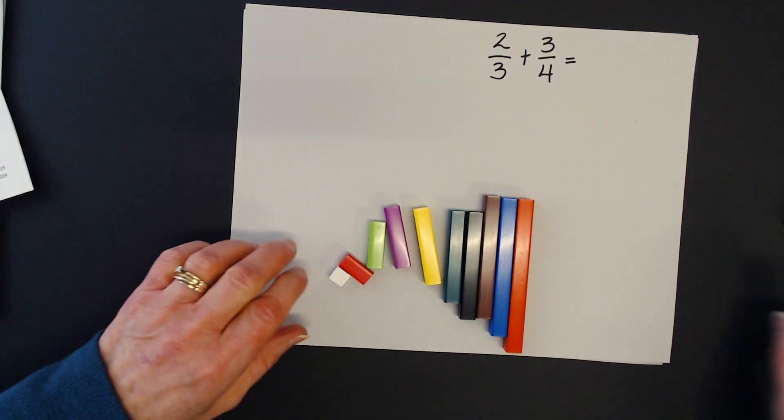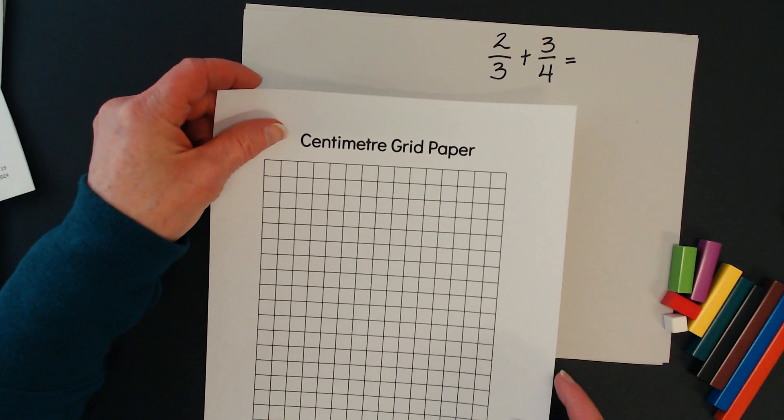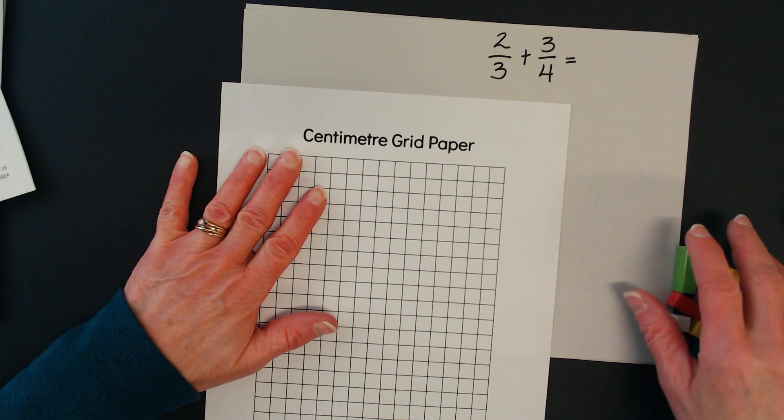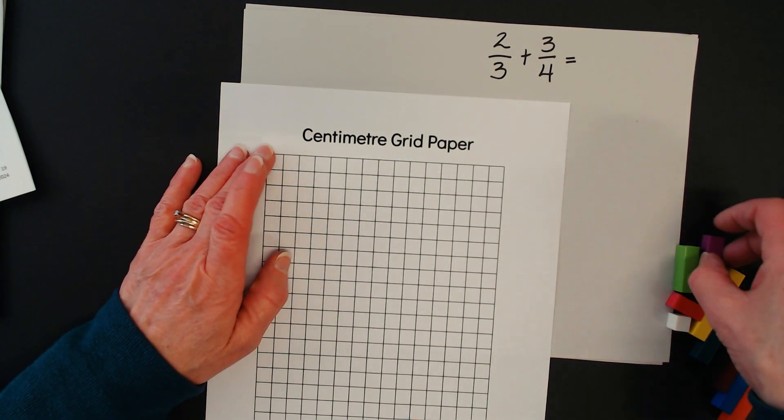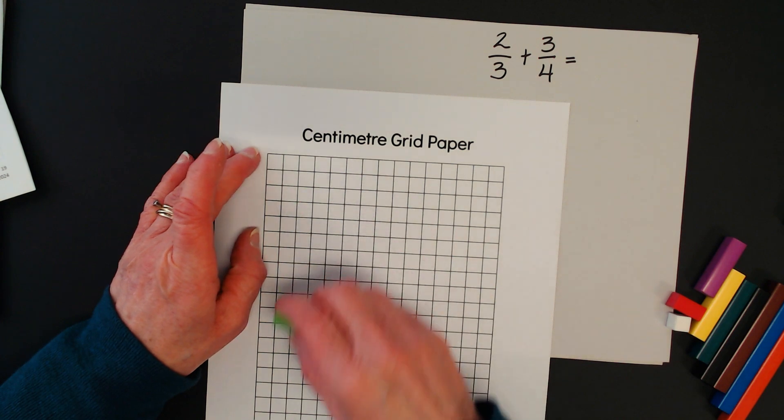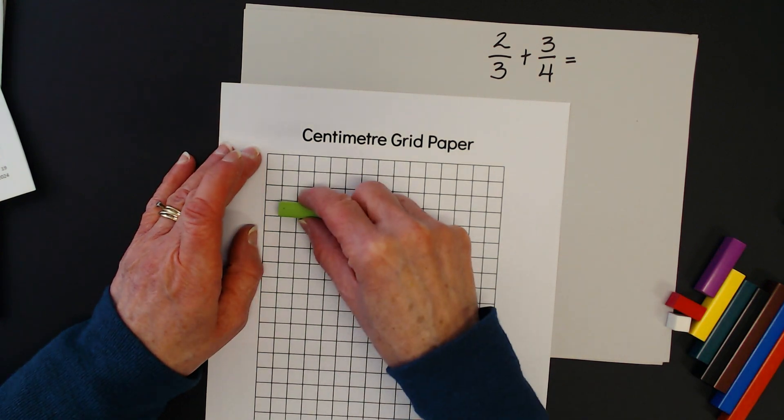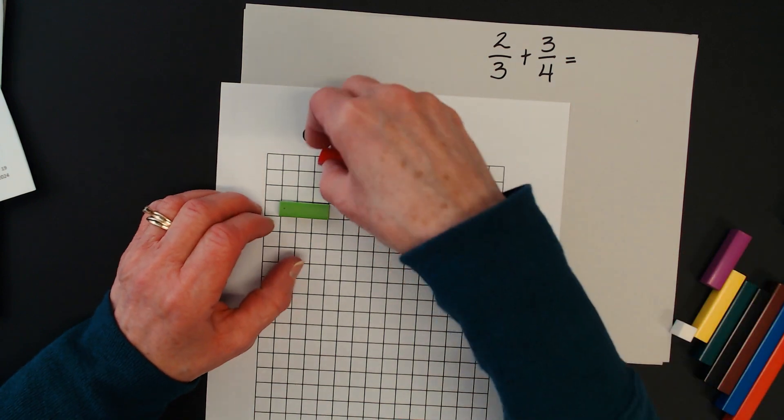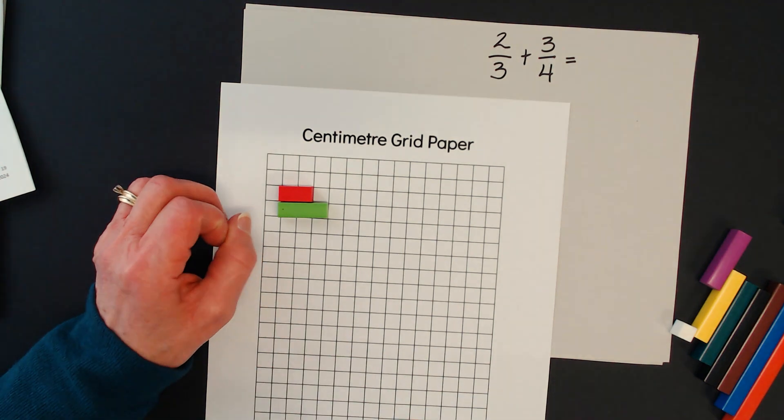Now I'm going to use some centimeter grid paper to make it easier. The first thing I want to do is build two thirds. I'm going to use the grid paper to help me because this rod has a length of three, and this rod has a length of two. So there I've built two thirds.